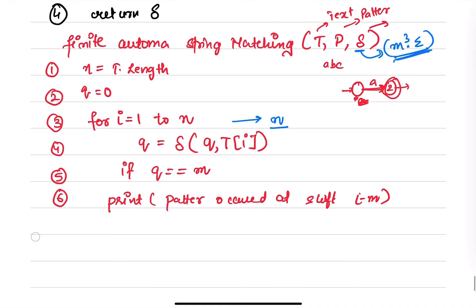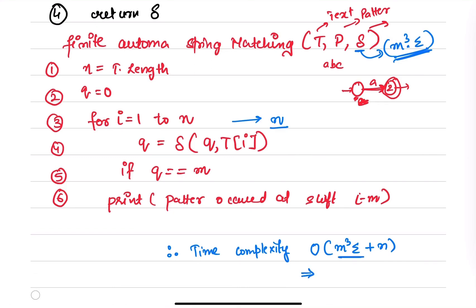So your total time complexity will be the transition function cost plus the main loop. Therefore the time complexity for the finite automata string matching is O(m³·|Σ| + n). If we neglect m³·|Σ| — because when we do analysis we find that n is always greater than m, as the text is always longer than the pattern — therefore we can say the complexity is O(n).